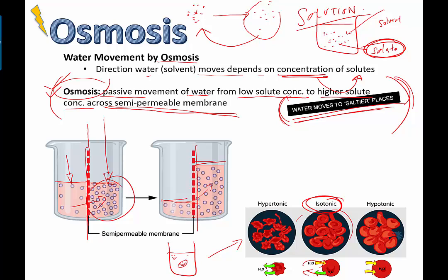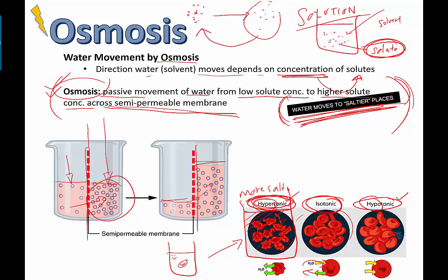But what happens if you put red blood cells into a hypertonic solution? With these words, you should always be talking about whether you're referring to inside or outside the cell being hypertonic. Hyper in general means more, hypo means less. So when I think hypertonic, I think more salty. If I put red blood cells into a liquid that is more salty than the cells, water moves to saltier places. So the water inside the red blood cells moves out into the solution, and then we get these shriveled, ugly red blood cells.